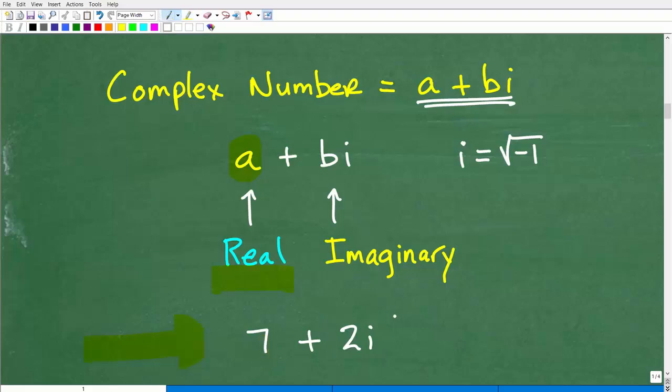Complex numbers take the form of a plus bi. So the a part of a complex number is a real component. Now here I have an example of a complex number, 7 plus 2i. This right here would be considered one complex number. So its real component is a real number, 7. So your first number with this a plus bi will be some number from the real number line. It could be a fraction, decimal doesn't make a difference. So in this case, we have 7.